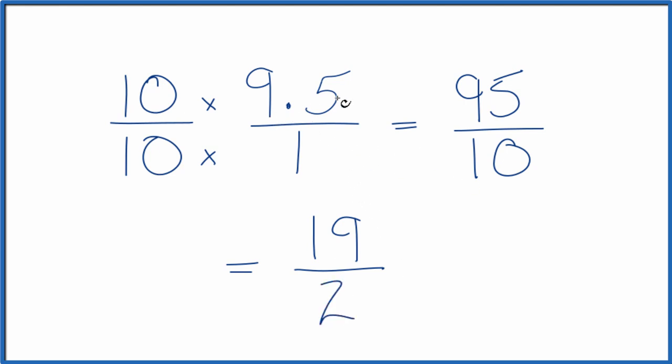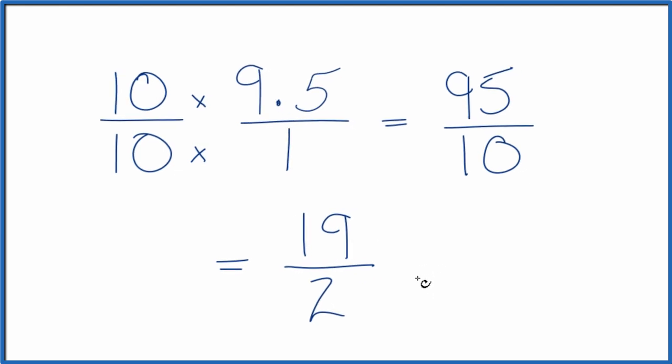So the decimal 9.5 equals the fraction 19 over 2. This is an improper fraction though, because 19, that's larger than 2. So let's change it to a mixed number as well.